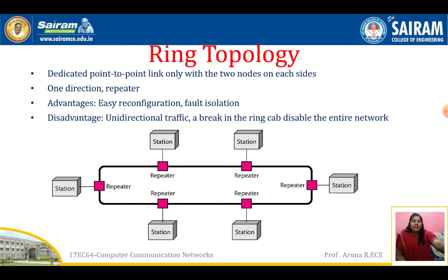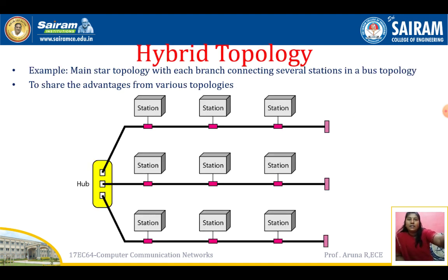In ring topology, each node has a dedicated point-to-point link with two nodes on each side. Information moves in one direction using repeaters, which amplify and regenerate the information. Advantages: easy configuration and fault isolation. Disadvantages: unidirectional traffic — it is not bidirectional — and a break in the ring cable disables the entire network.